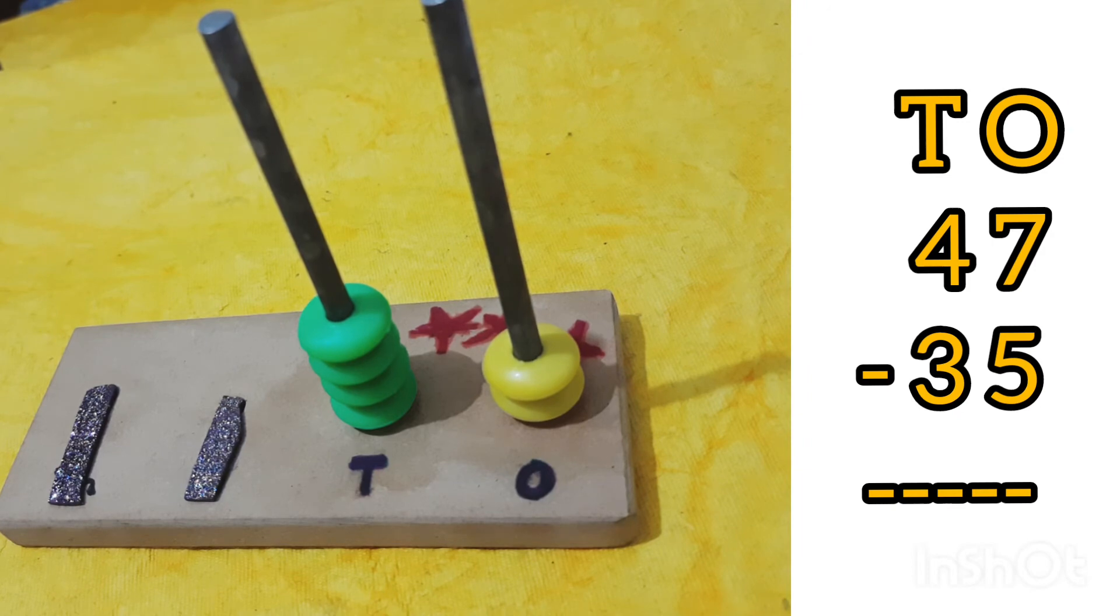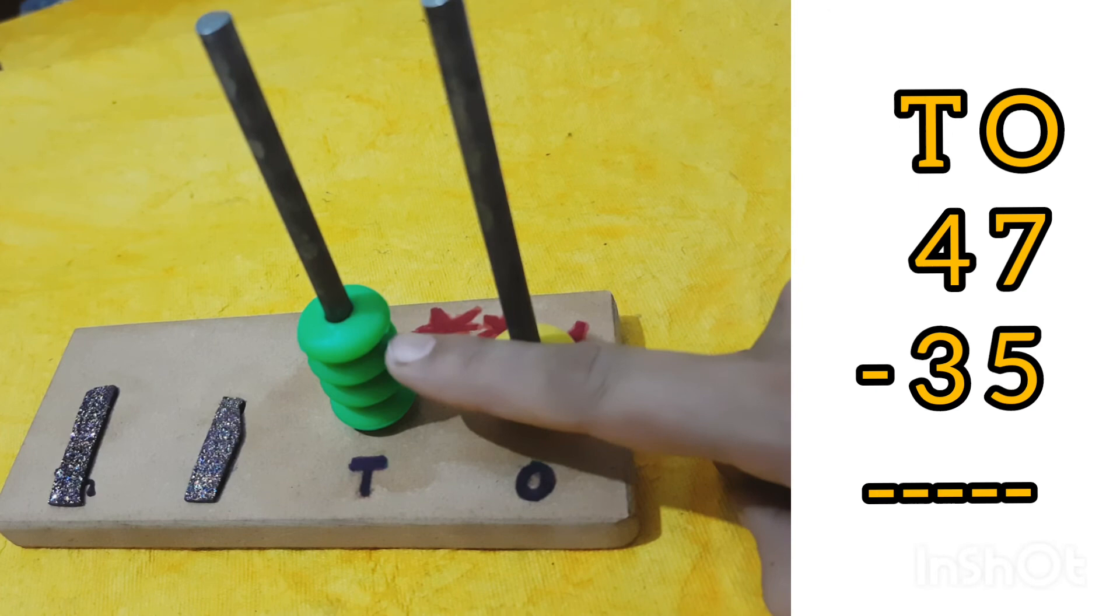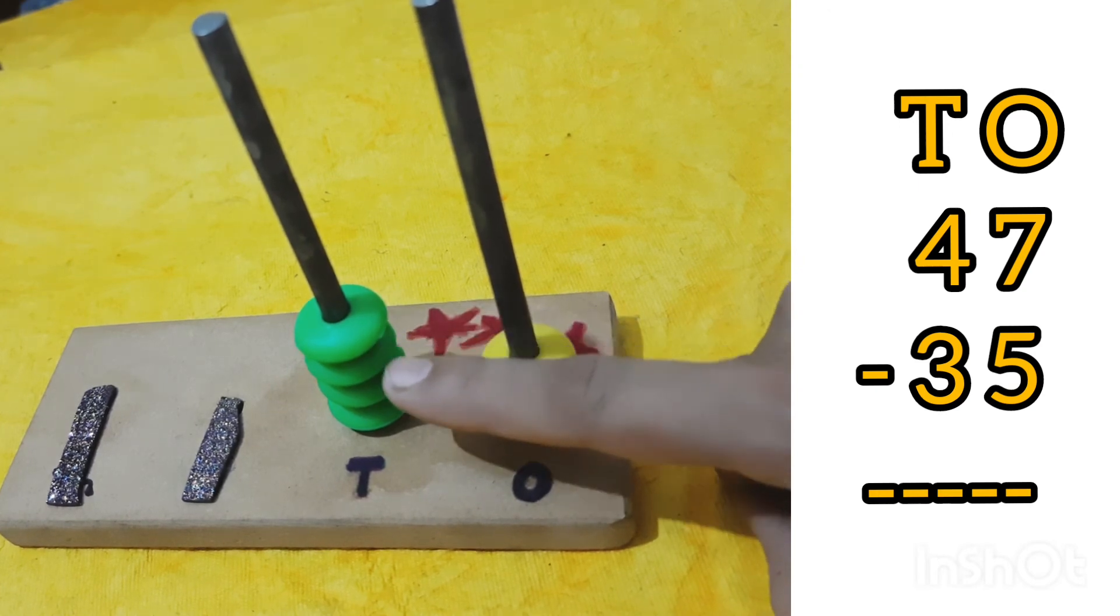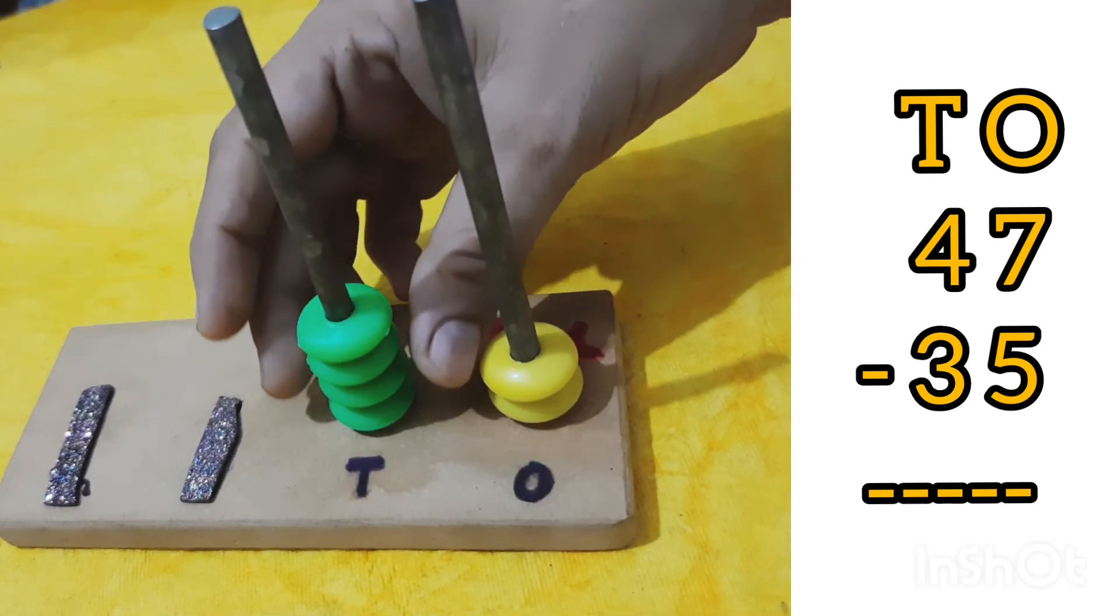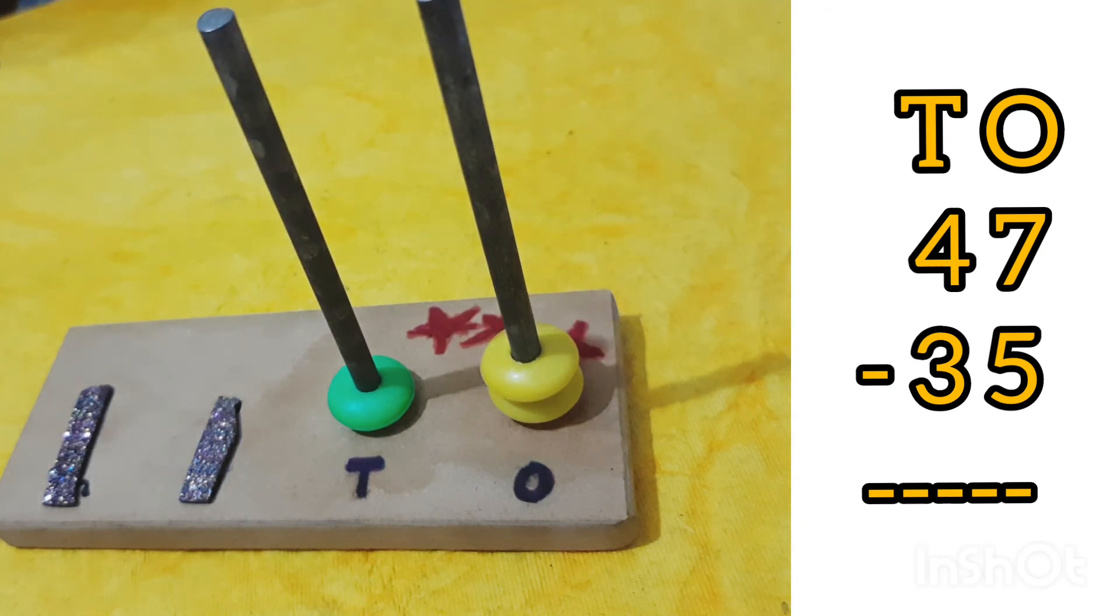Now in 35, 3 is at the tens place. We have to remove 3 from 4. Now I have removed 3 beads from the tens place.